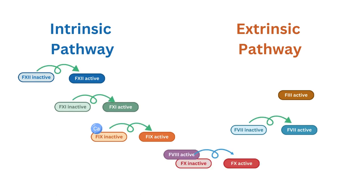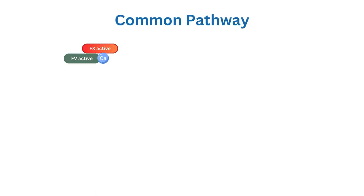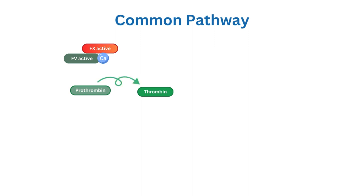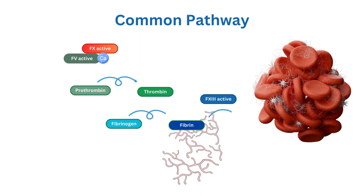Both pathways can be activated independently, but they often work together to ensure efficient blood clotting. The goal of the common pathway is to form a stable blood clot. Activated Factor 10, along with Factor 5 and calcium ions, forms the prothrombinase complex. The step where fibrinogen is transformed into fibrin is where the meshwork of the blood clot is formed. The clotting process is reinforced by the activation of Factor 13, which stabilizes the fibrin mesh.